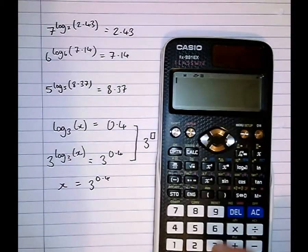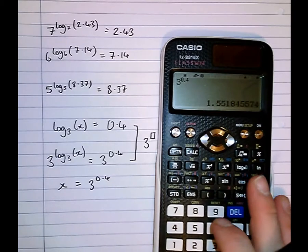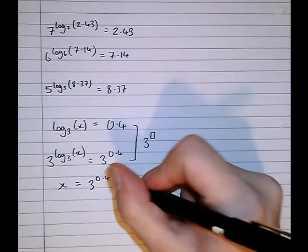3 to the power of 0.4, which we do with 3 significant figures which is usually the custom, is 1.55 to 3 significant figures.